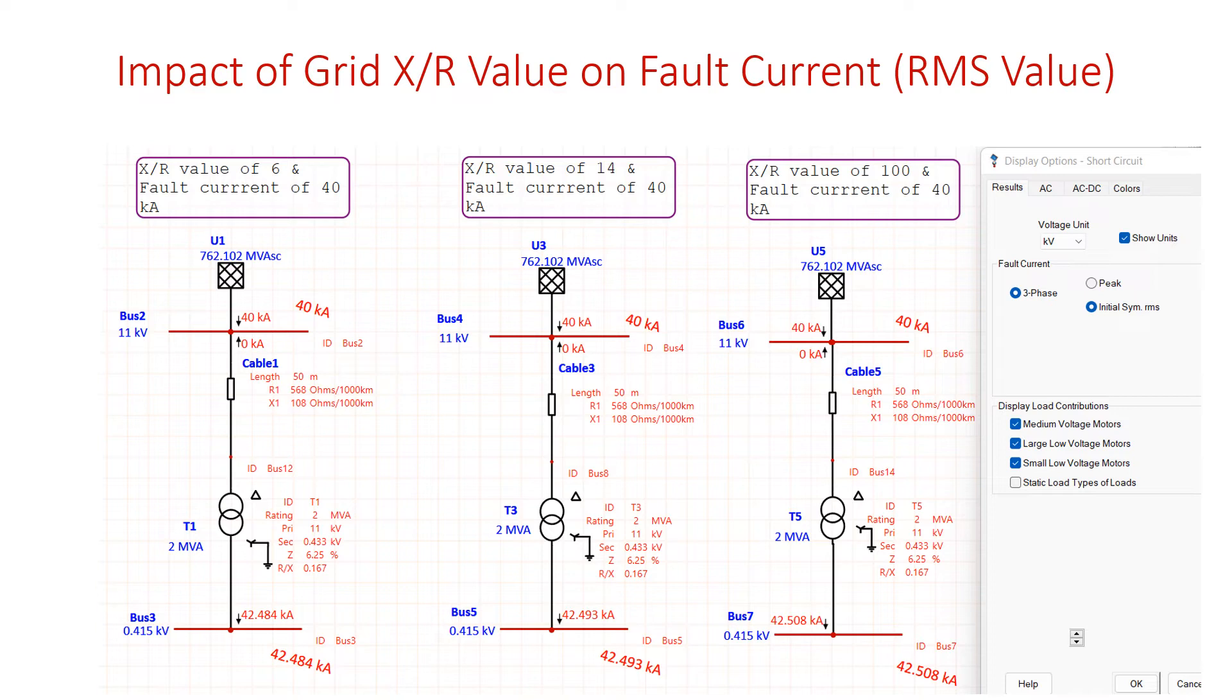If I change the X by R value as 14 or 100, it doesn't matter. The fault current on bus number 4 and bus number 6 is 40 kilo amps and bus number 5, bus number 7 is almost 42 kilo amps. There is no major change observed in initial symmetrical RMS value.